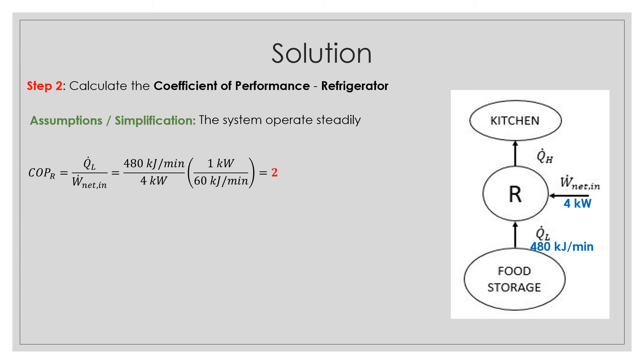Which is available from the equation 480 kJ per minute and 4 kW. And we convert the unit of the kJ per minute. And we obtain the final answer is 2 for COP_R.